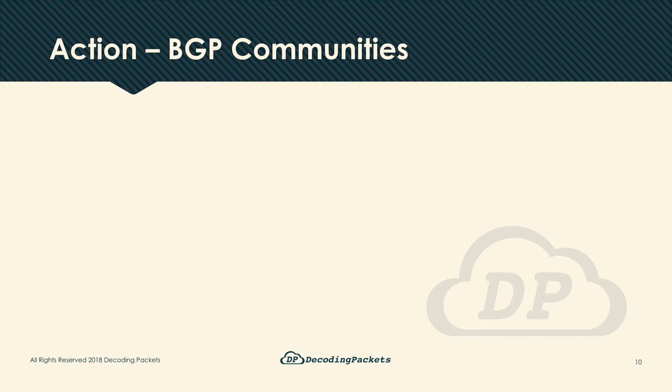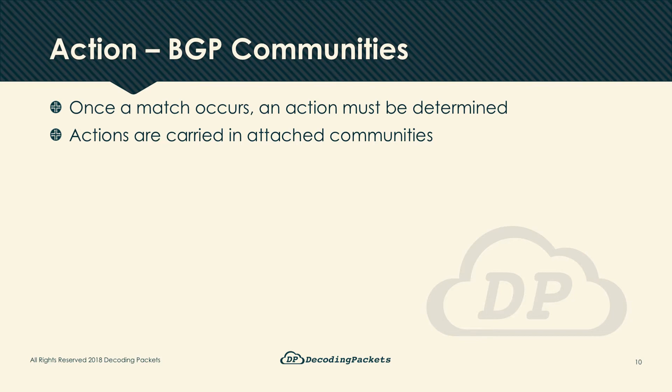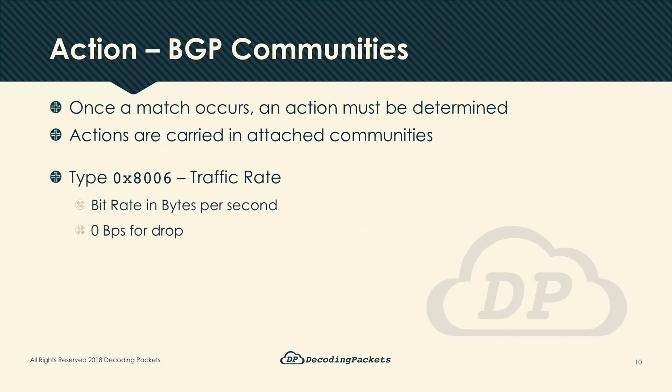Once traffic is matched, we must act upon it — for example, permit, drop, rate-limit, or remark. The NLRI itself does not describe these actions; instead, the actions are carried separately in attached extended communities. The NLRI components are used to match the traffic, while the action or actions to be taken are carried in those attached communities. There are only a limited number defined, so we can feasibly cover them all.